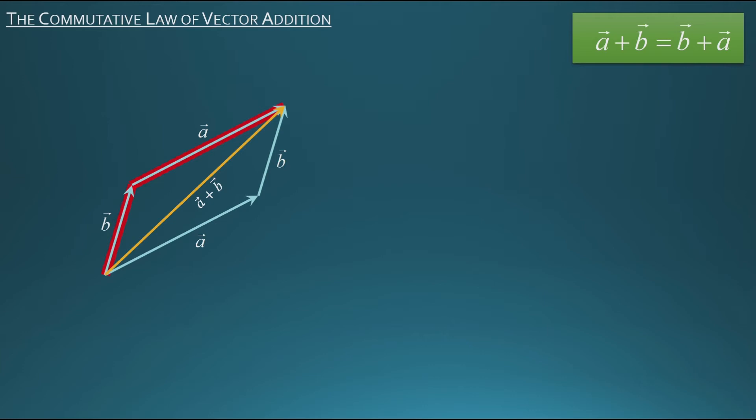And if I do I get a resultant that looks like this, exactly the same as the resultant that I got when I added a plus b. But this time I started with vector b and added vector a to it, so I'd call that resultant vector b plus vector a, or simply b plus a.